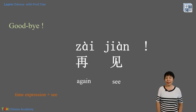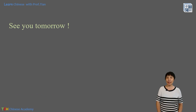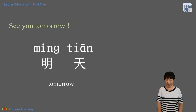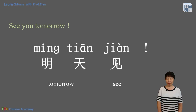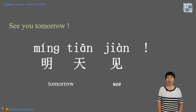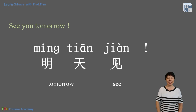Based on this pattern, how do we say 'see you tomorrow'? Tomorrow is 明天, and 'see' is 见. In Chinese we don't have to say 'you' — just 明天见. So 明天见 means 'see you tomorrow.'